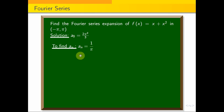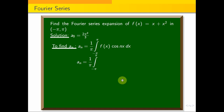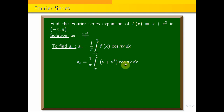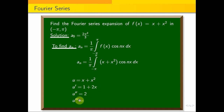a_n is equal to 1 by pi integral minus pi to pi f of x cos nx dx. Now f of x is x plus x square into cos nx dx. We will use Bernoulli's formula. Here u is equal to x plus x square, u dash is 1 plus 2x, u double dash is 2, and u triple dash is 0.